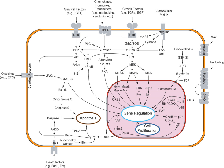Some signaling transduction pathways respond differently depending on the amount of signaling received by the cell. For instance, the hedgehog protein activates different genes depending on the amount of hedgehog protein present. Complex multi-component signal transduction pathways provide opportunities for feedback, signal amplification, and interactions inside one cell between multiple signals and signaling pathways.